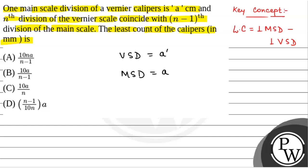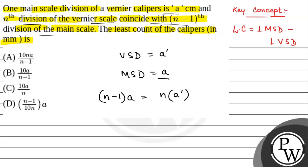We have been given that the nth division of the Vernier scale coincides with the (n-1)th division of the main scale. So we have: (n-1) × main scale division = n × Vernier scale division, that is (n-1) × A = n × A'.